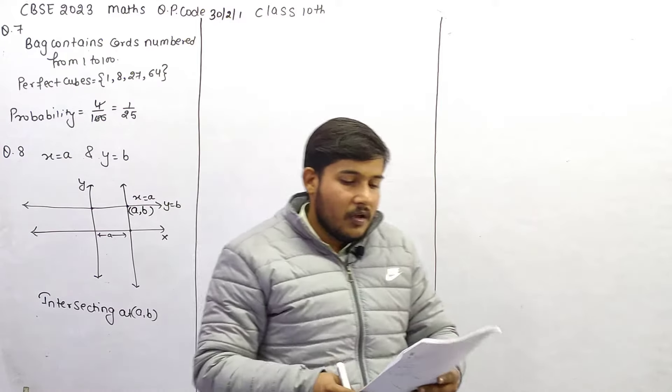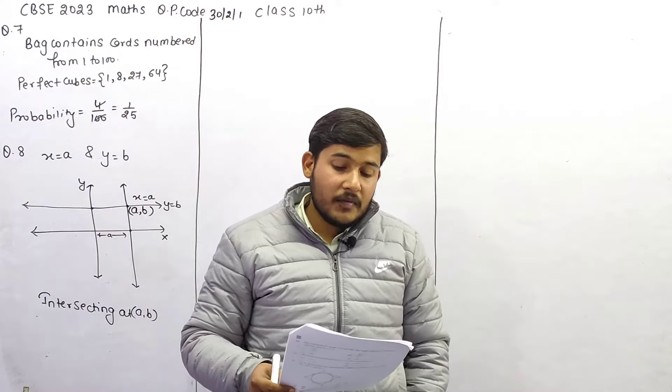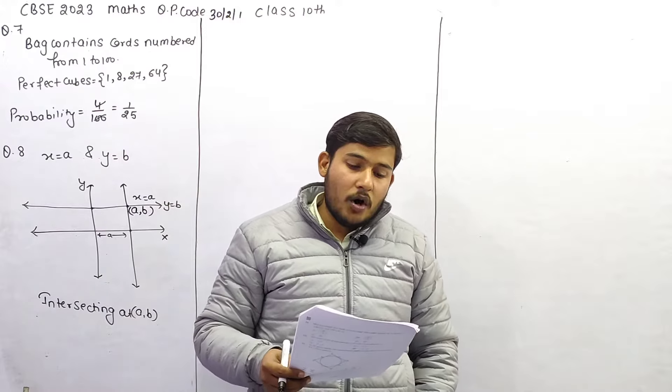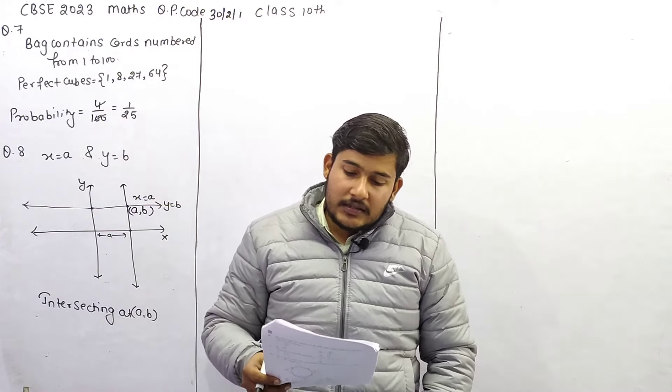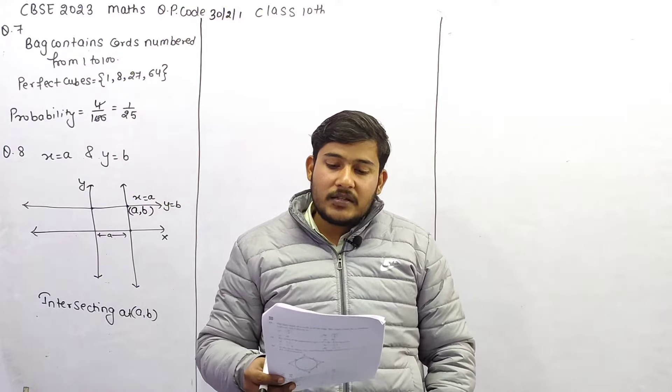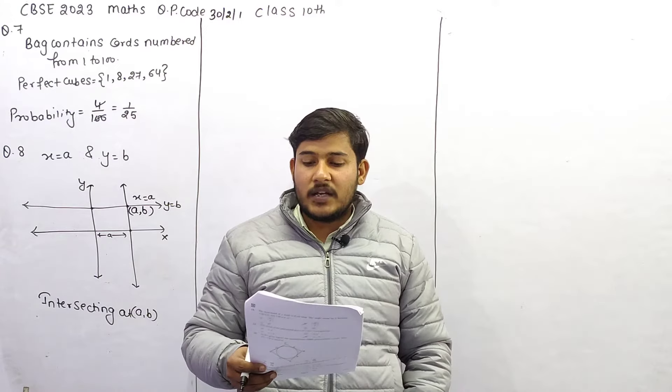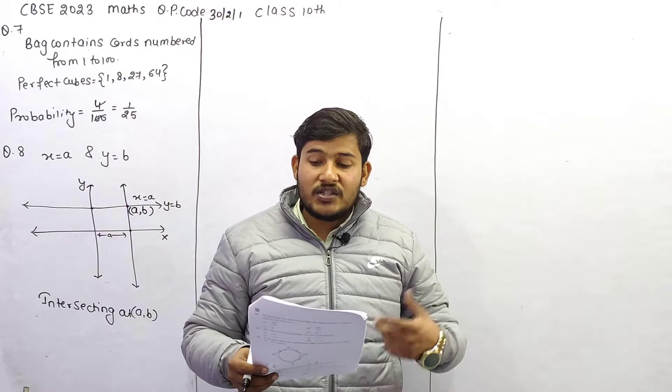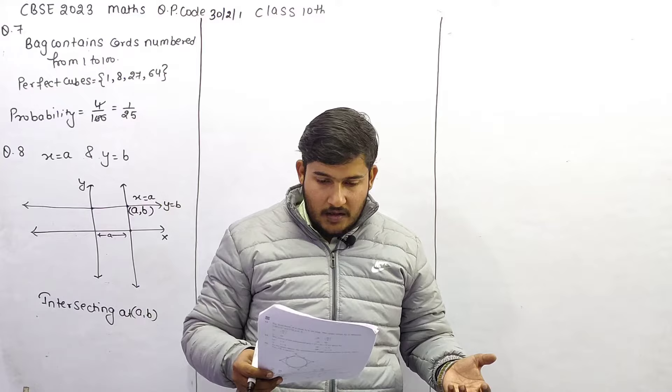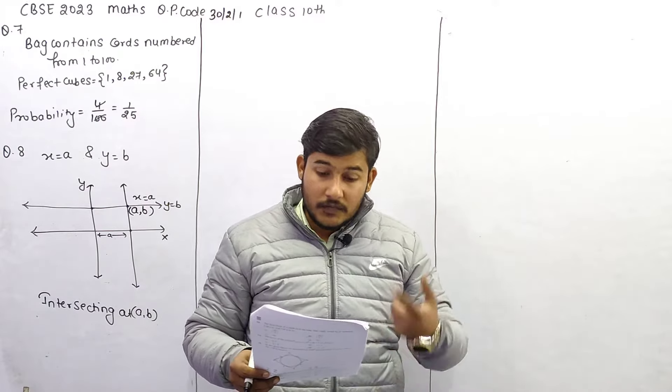इसके बाद, question 9 देखिये, if one zero of the polynomial 6x square plus 37x minus k minus 2 is reciprocal of the other, then what is the value of k? समझे,